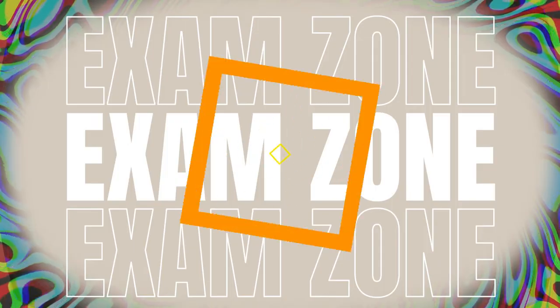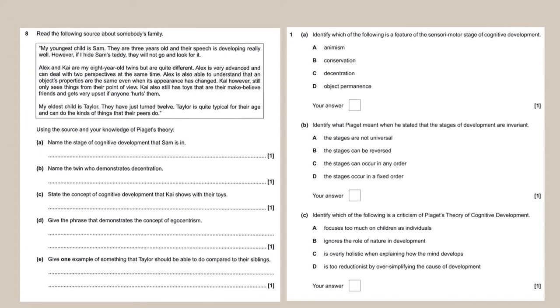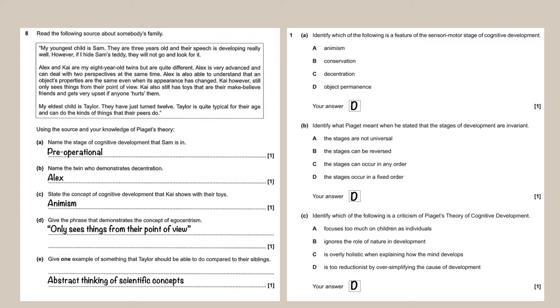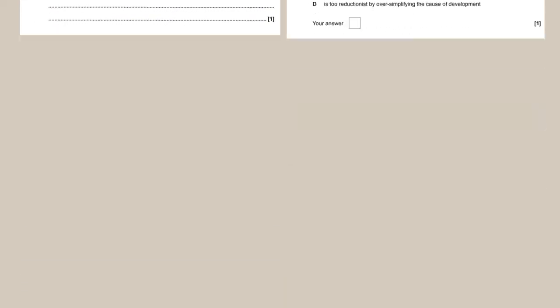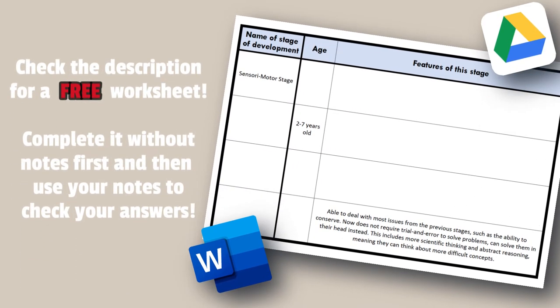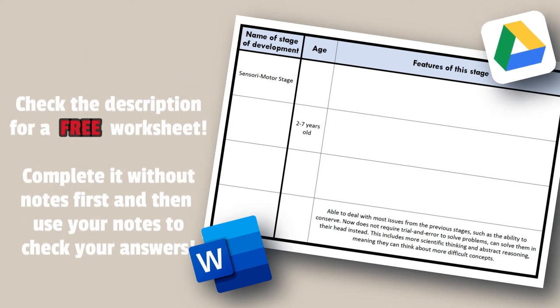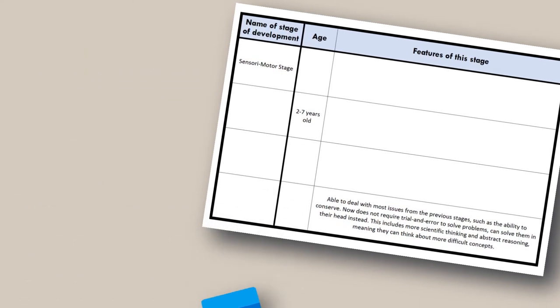For the exam zone today, I want to show you a couple of things. We've got two real past paper questions here. You can pause it if you want to give it a go, otherwise the answers are on the screen now. As you can see, it's all based around those key terms and which key terms fit into which stage. To help you with revision, I've linked down below a free resource. I've created this blank table - all you've got to do is fill in the gaps.